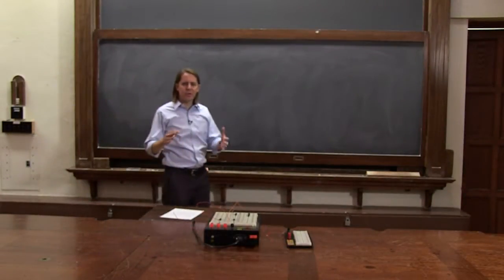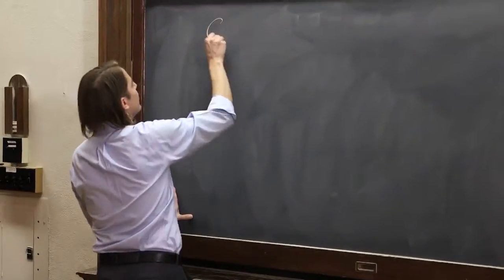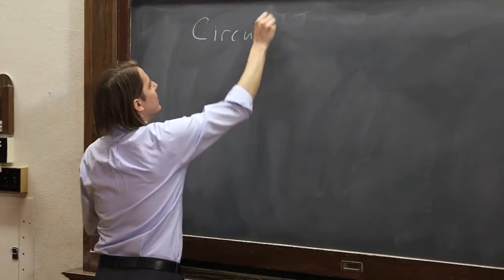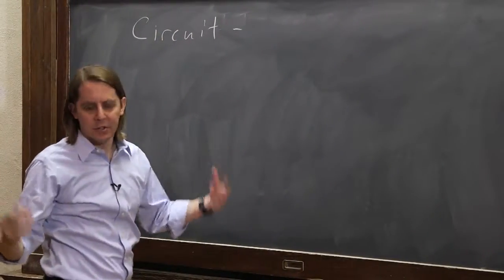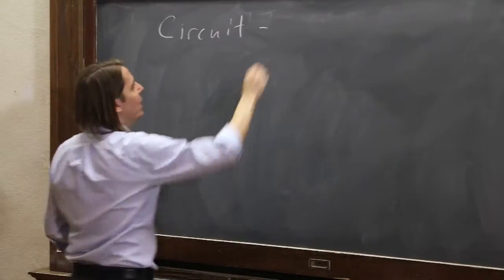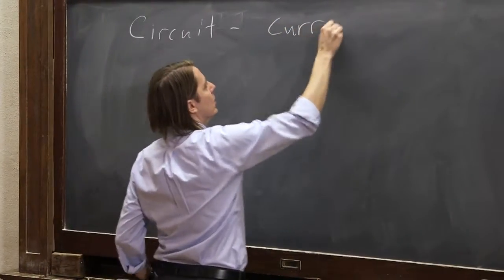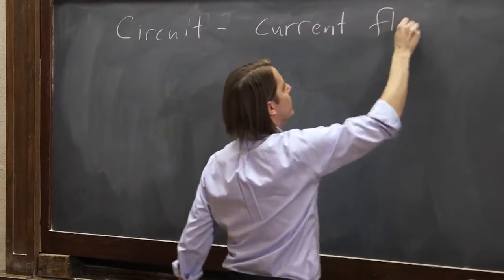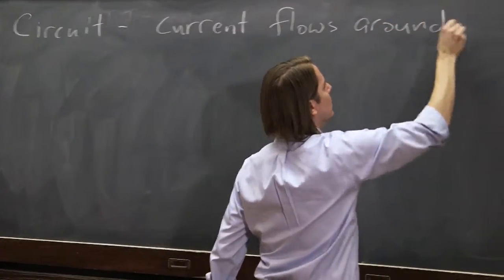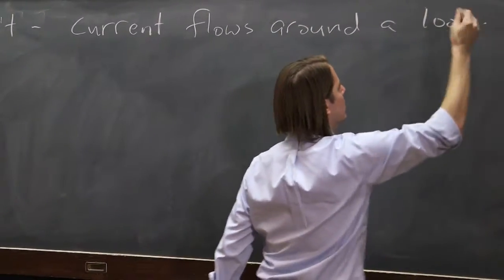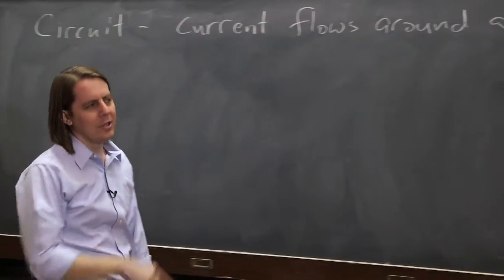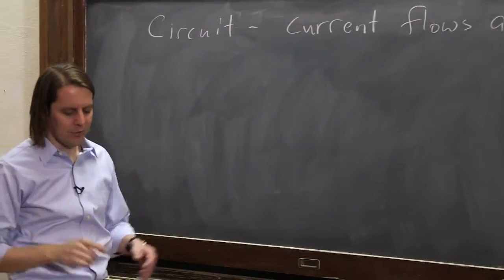We now know enough to think about a circuit, a very basic circuit, and let's even give it a definition. Circuit needs a definition too. How about current flows around a loop? Anytime current flows around a loop, we'll say that's a circuit.